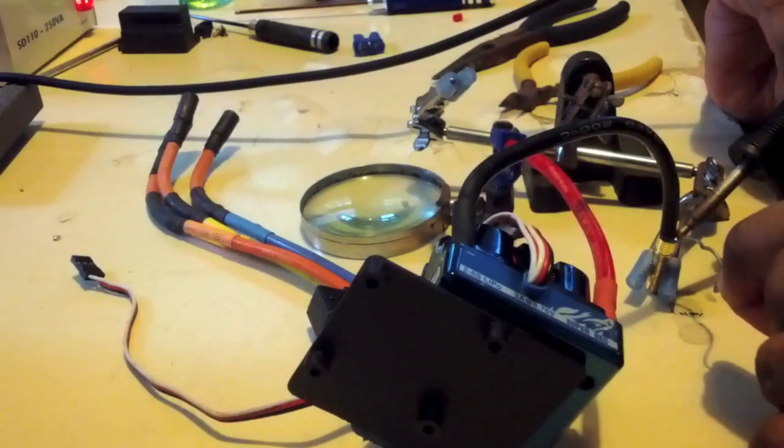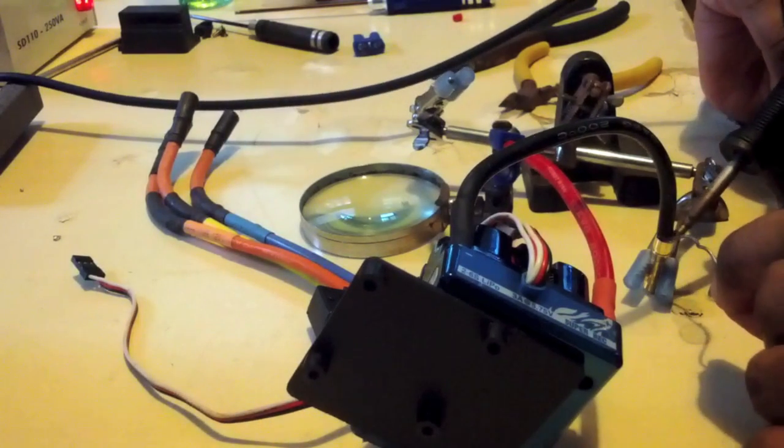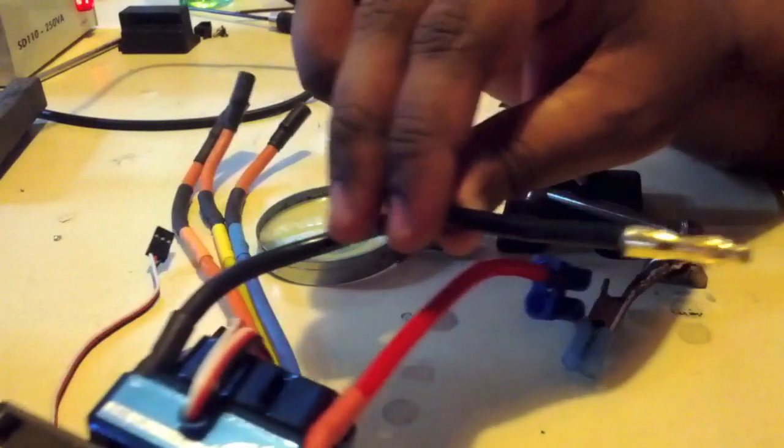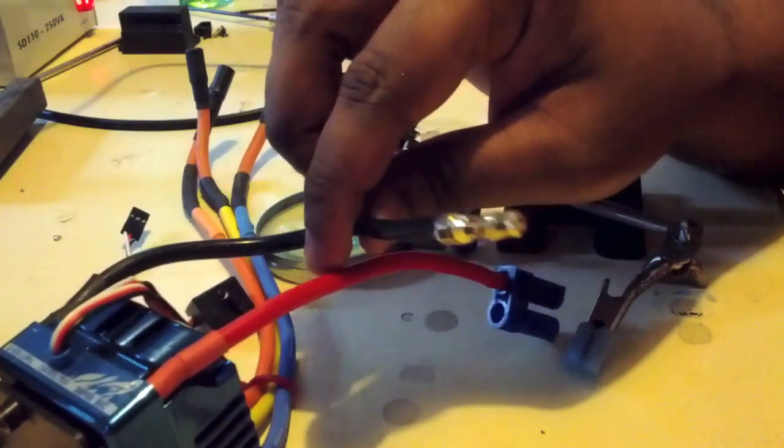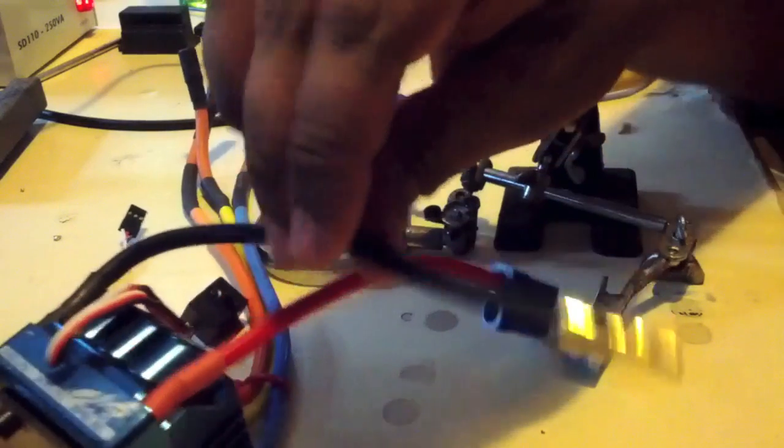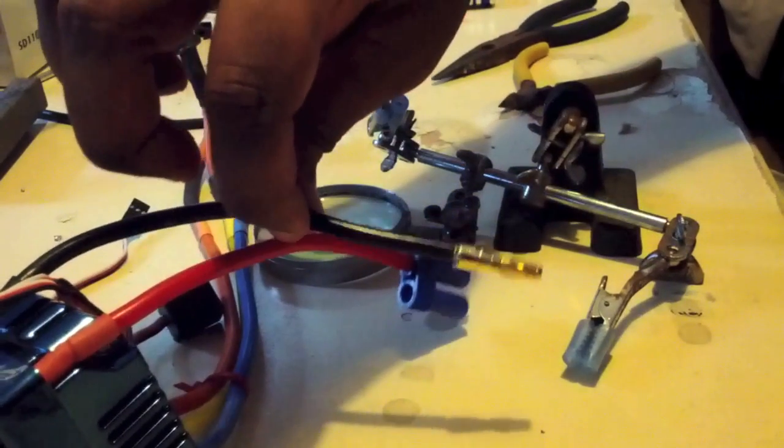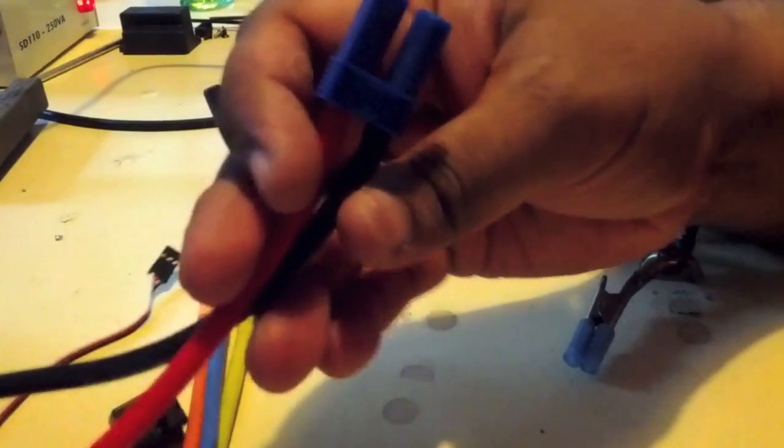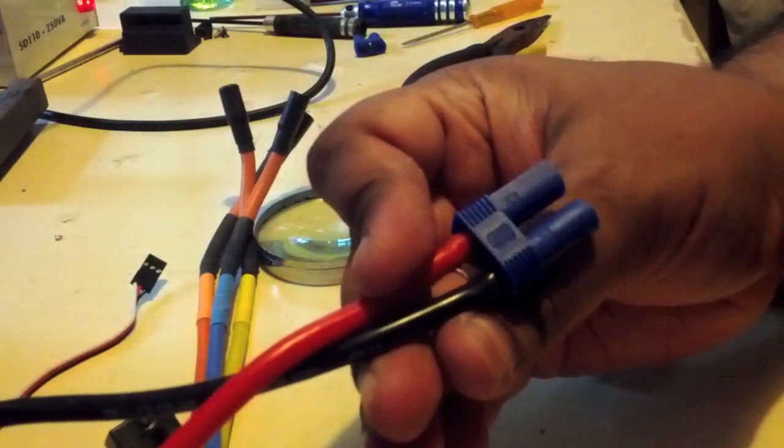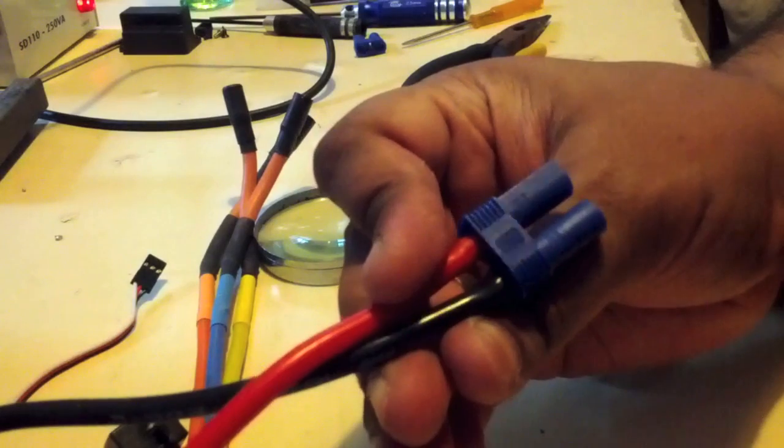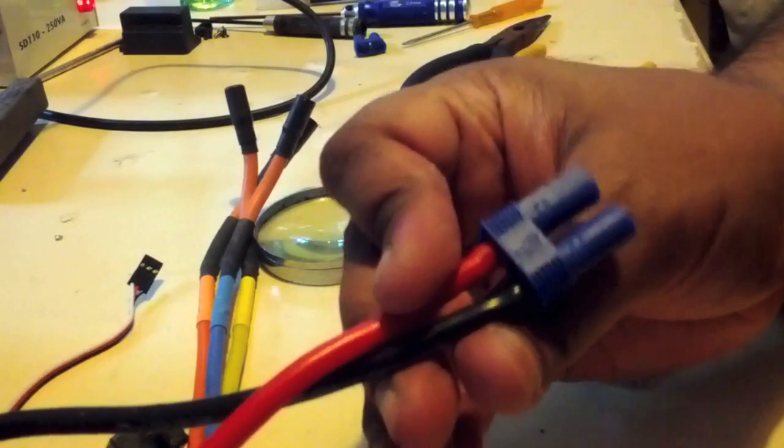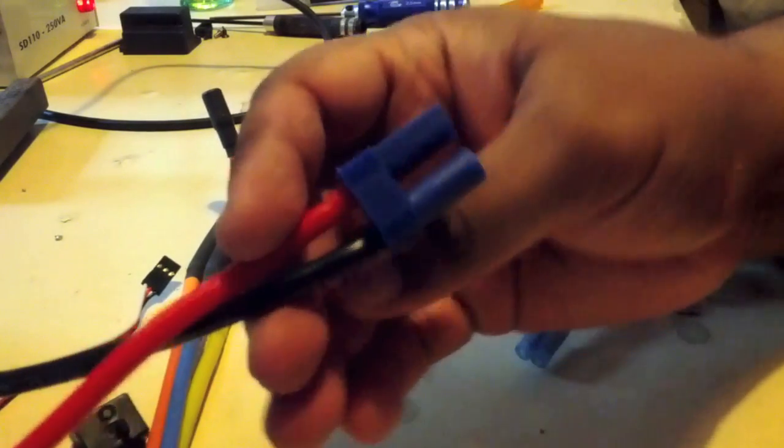Here you can see I'm just finishing off the negative lead on the ESC. The ESC already has 10 gauge AWG wire, so it's perfect to go with the EC5 connector. The EC5 connector supports 120 amps continuous, and that's really fantastic. You can see the positive-negative terminals marked in the EC5 case.